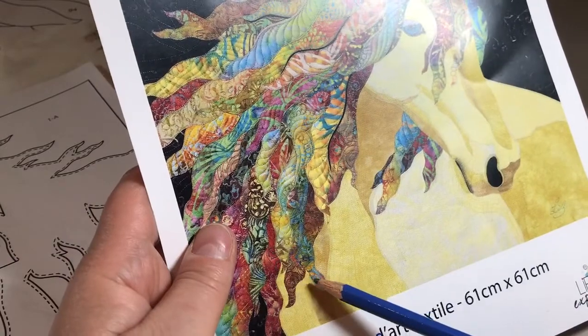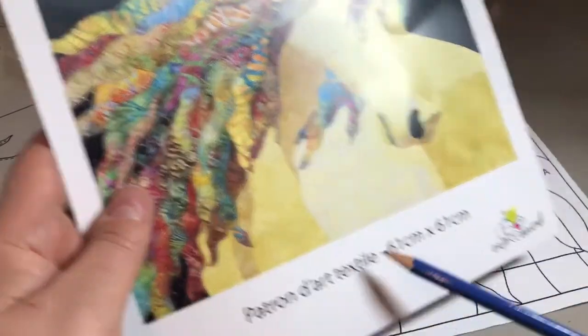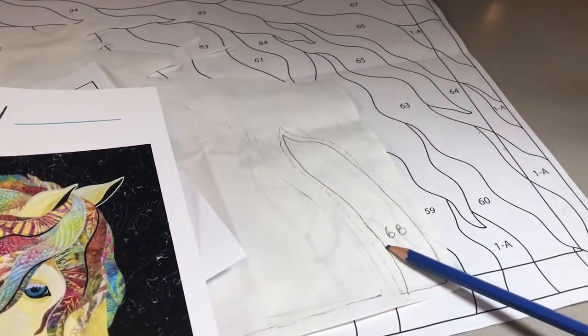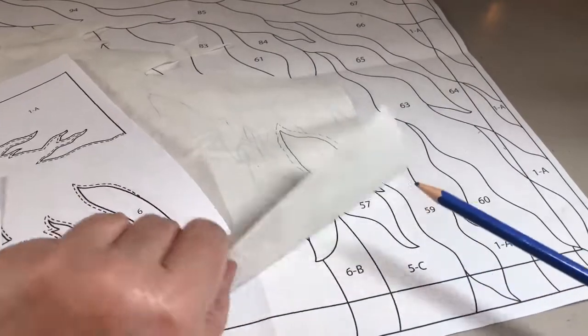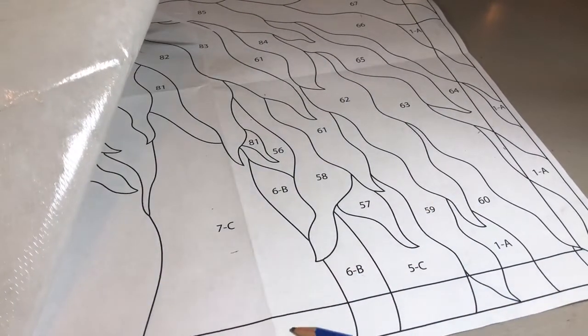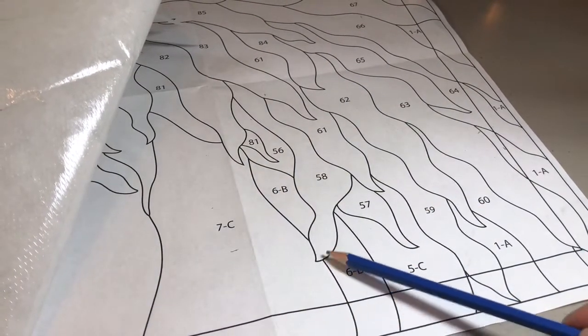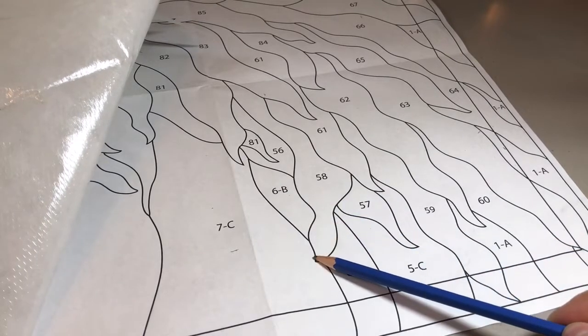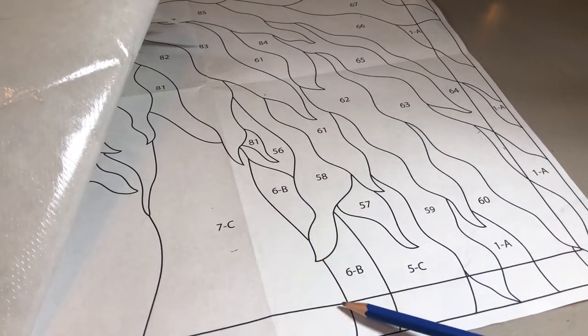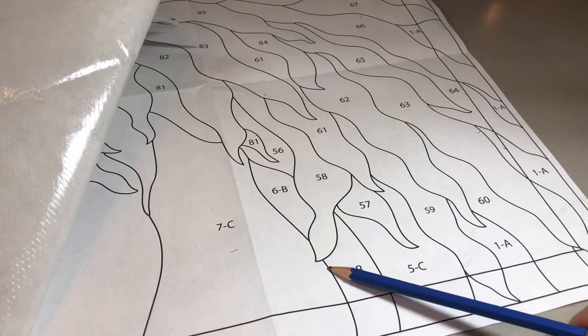You really need to be careful when following along to make sure you're making one single piece. Same here with number 7—you see the mane going over it, but you're still cutting out the whole piece.